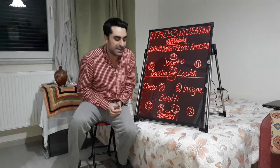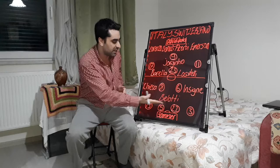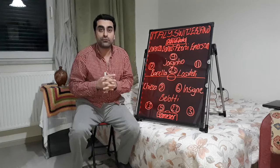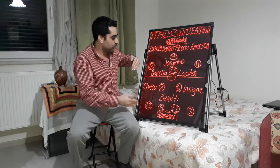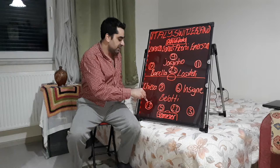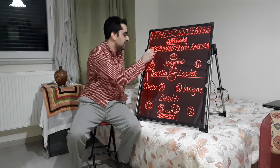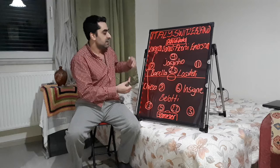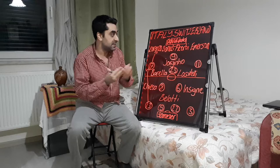Italy played in a 4-3-3 formation and Switzerland played in a 4-2-3-1 formation. In the beginning of the game, Switzerland played more effectively and developed more attacks from the left flank with Rodriguez and Vargas. Rodriguez moved higher and wider, and Vargas pressed Di Lorenzo. Chiesa was pushed higher and the right wing of Italy was very empty, with Switzerland finding a lot of empty spaces on that side.